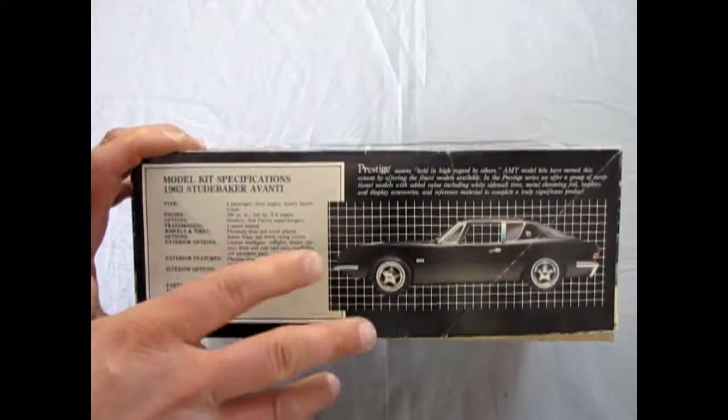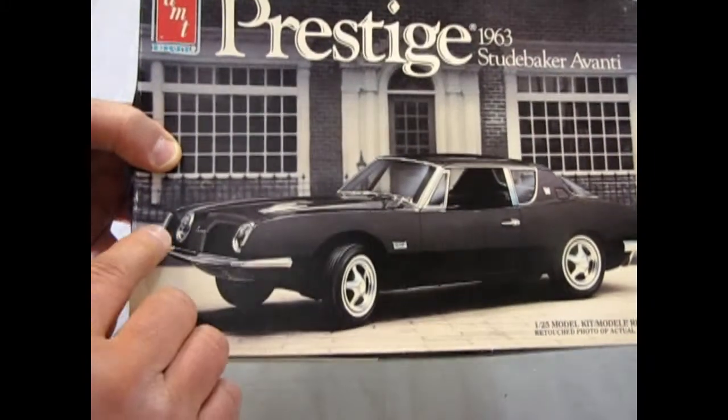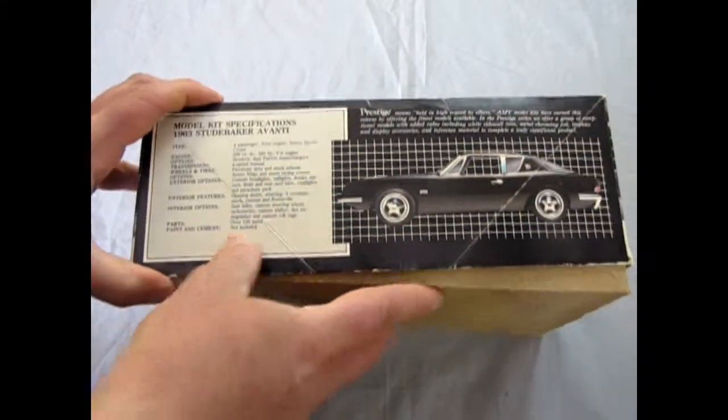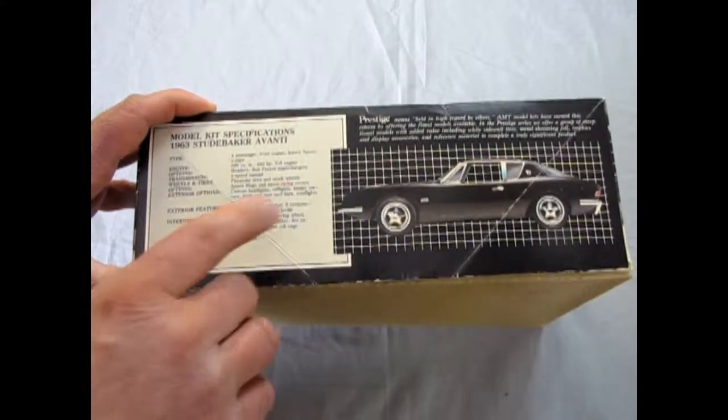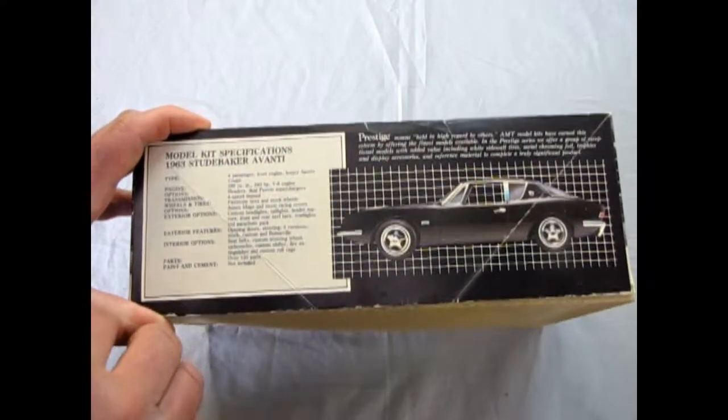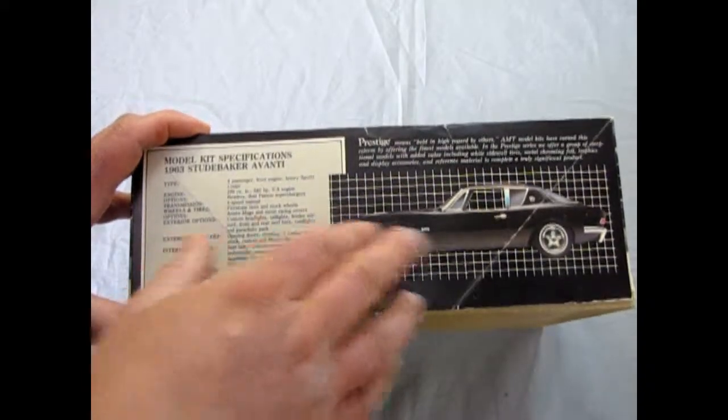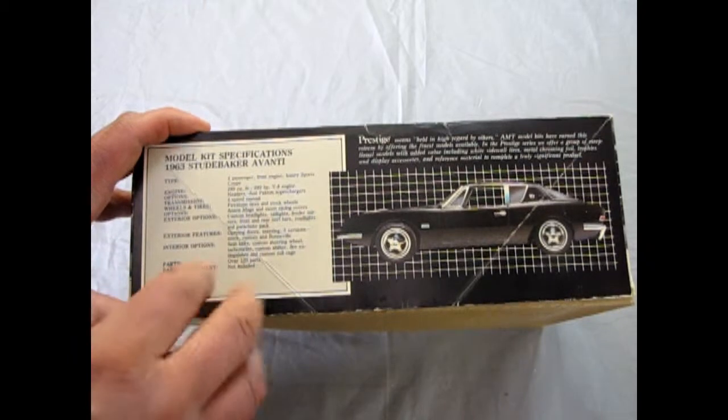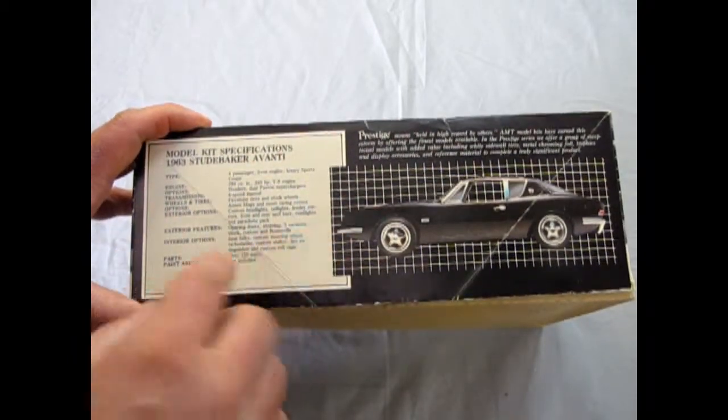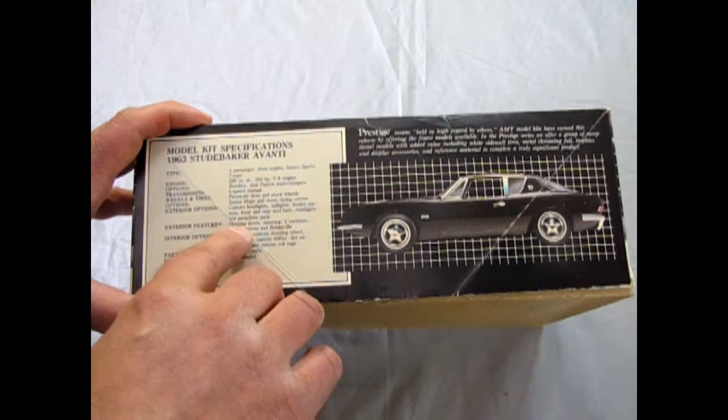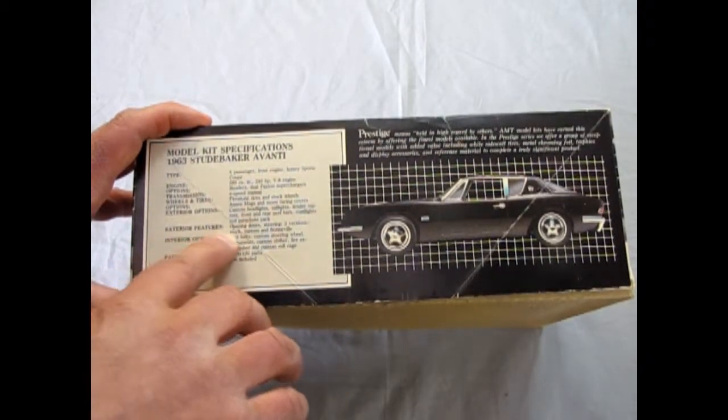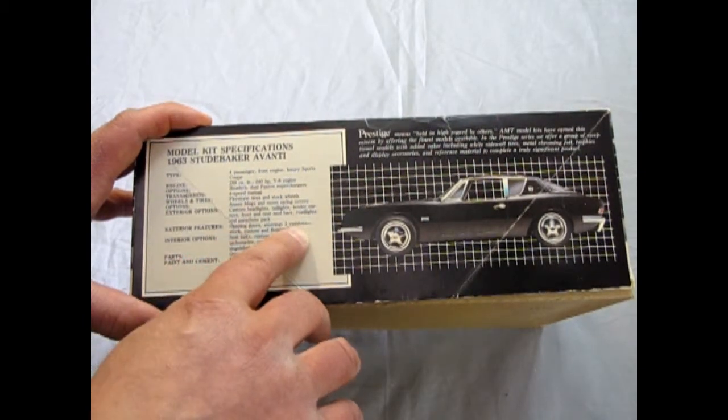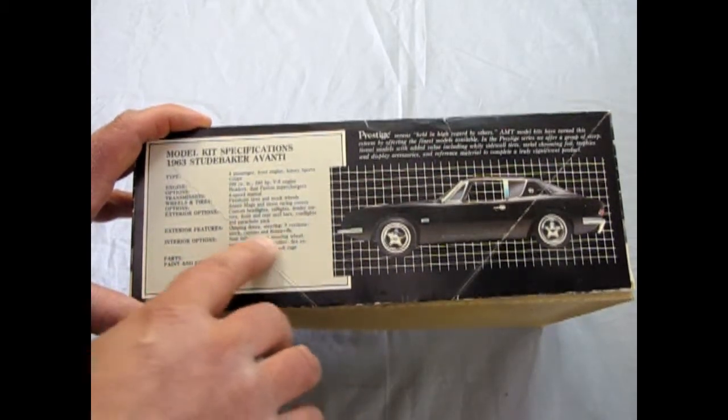Now something I figured out about this. The 63 Avanti has round headlights. These custom ones they're talking about are square, as we will see. The 64 to 65, or whenever they stopped making the Avanti under Studebaker, had the square headlights. So if you get a couple of these, you can actually build a few different years of the Avanti using these custom parts. So anyway, exterior features: opening doors, steering. Three versions: stock, custom, and Bonneville for your salt flats.